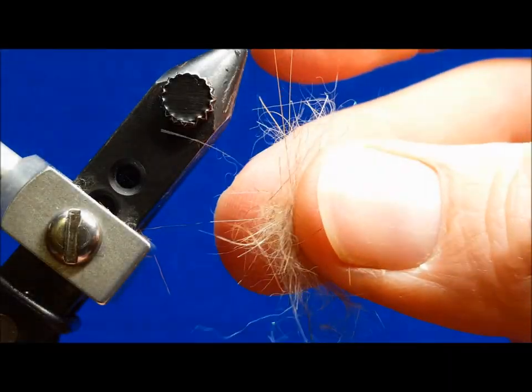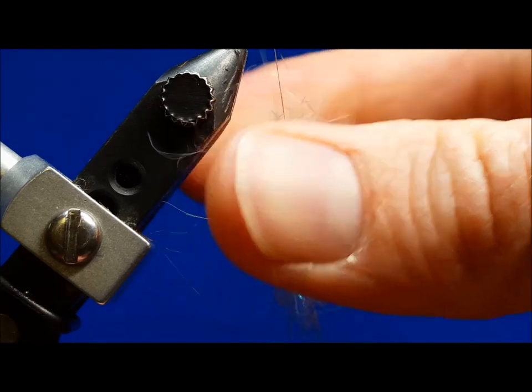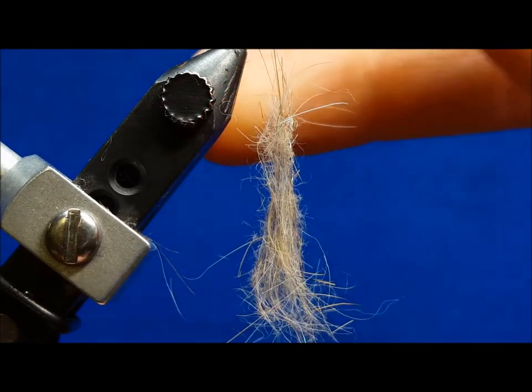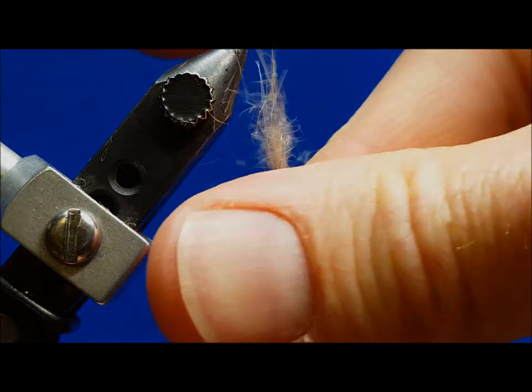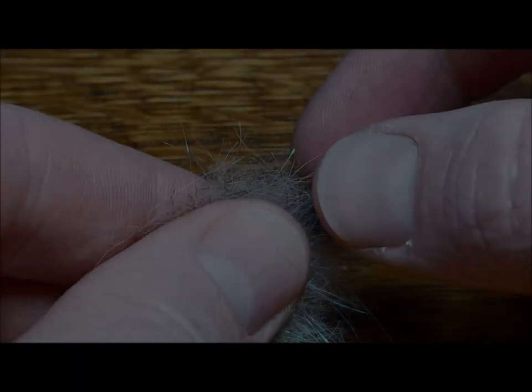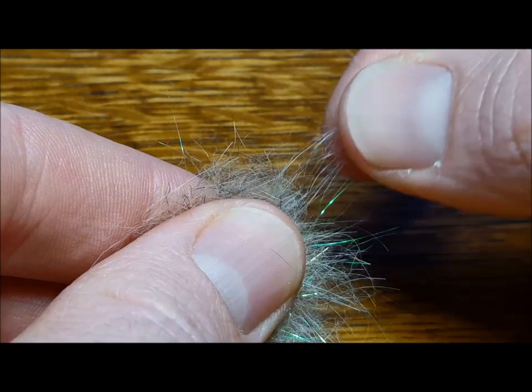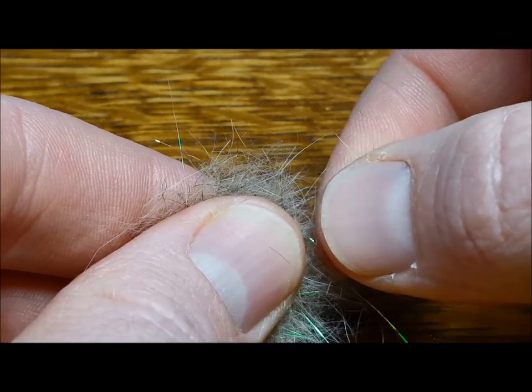It's important to remember that less is more. The most common mistake that I see beginning tiers make when either creating a dubbing rope or loop is trying to add too much material. When selecting your fibers, simply hold a clump in your hand and gently pluck a sparse mixture of fibers from the edge.